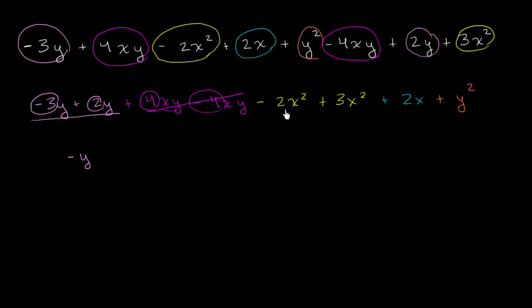Then I have my x squared terms. Negative 2 plus 3 is 1. Or another way of saying it: if I have three x squareds and take away two x squareds, I'm left with one x squared. This simplifies to x squared. So plus x squared.